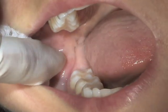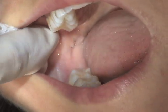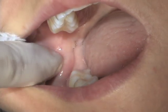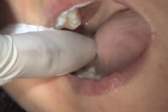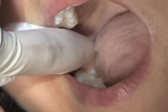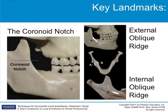Clinicians new to local anesthesia frequently confuse the insertion site for this injection. They often neglect to palpate the internal oblique ridge and believe they are depositing between the internal and external oblique ridges — that is not the case. Be sure to palpate the internal oblique ridge and deposit medial to it. For patients with class III occlusion or a prognathic mandible, insert approximately one centimeter higher. For children, insert at the level of the occlusal plane.